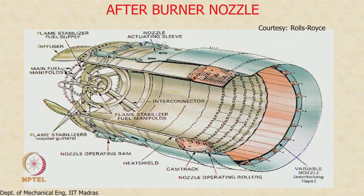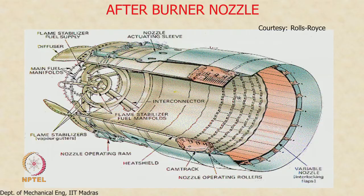You can see the fuel manifold — we inject fuel from here, and flame stabilizers or V-gutters are provided to give stabilization. The V-gutters always provide a region of low-speed circulation which keeps a kernel of flame on continuously. Combustion takes place in this portion of the afterburner, which is the duct where heat release occurs and the stagnation temperature is increased.